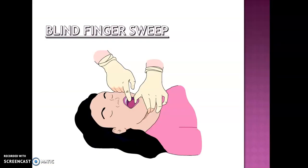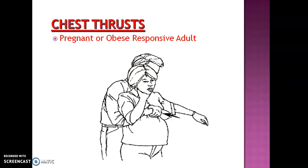An important technique for children and adults is the blind finger sweep — simply insert a finger into the mouth and sweep around blindly to remove any object causing the choking. Another method is the chest thrust, which is used in pregnant or obese victims. Apply thrust to the chest region with both hands to try to dislodge the obstruction. Remember, when hands go to the throat region, recognize it as airway obstruction.